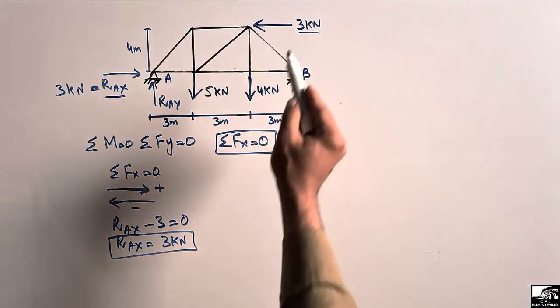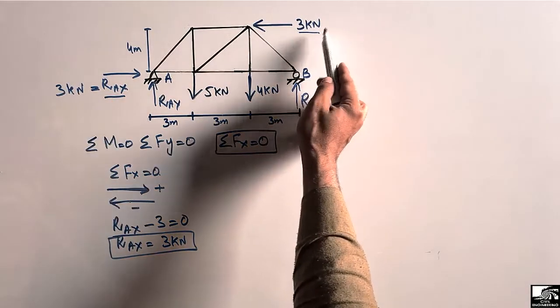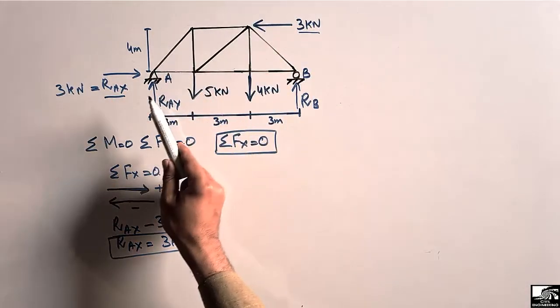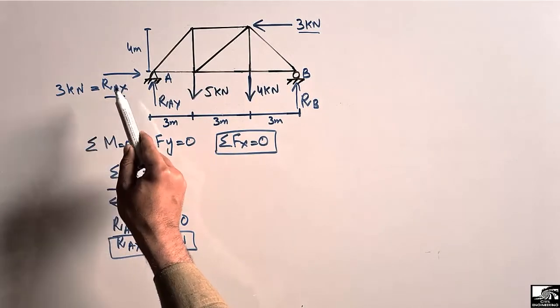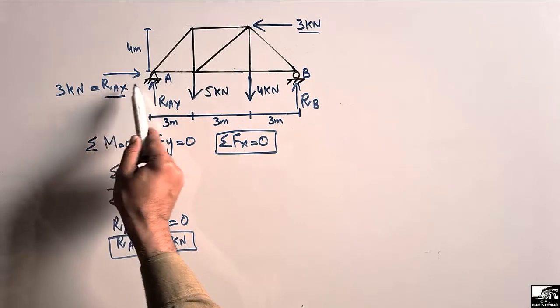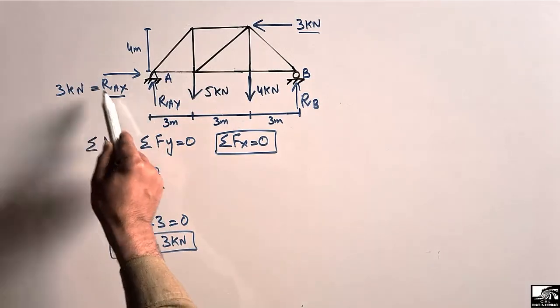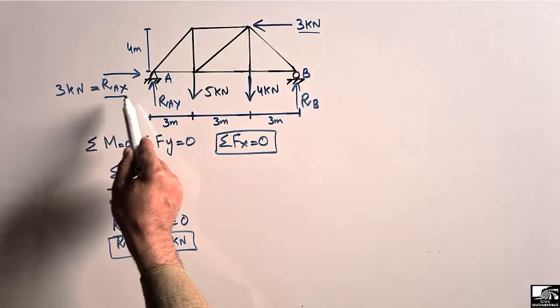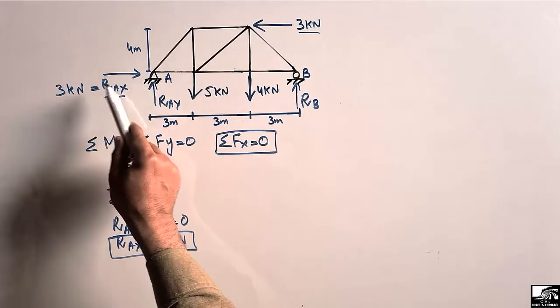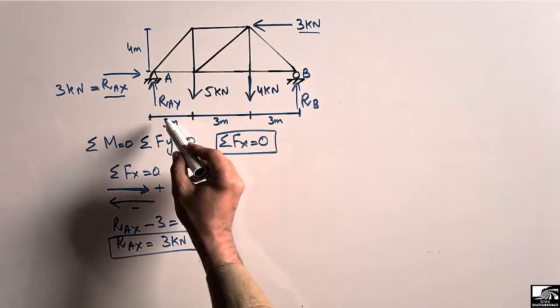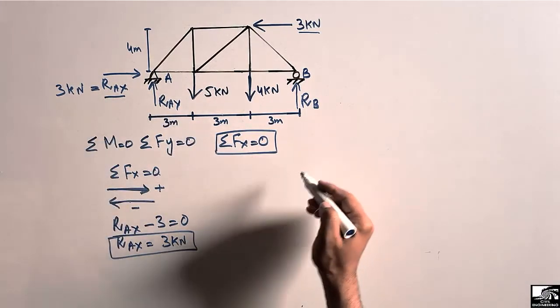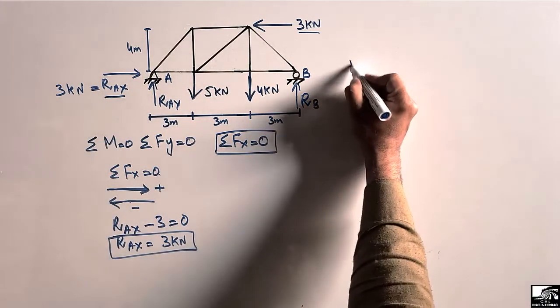All the horizontal load is only taken by support A because it is a hinge support, so it resists the horizontal load. Now we need to find R_AY and R_B, which are the two remaining unknowns.